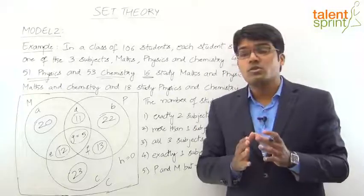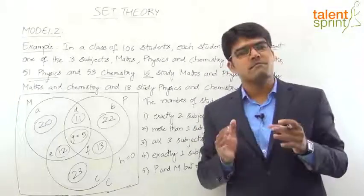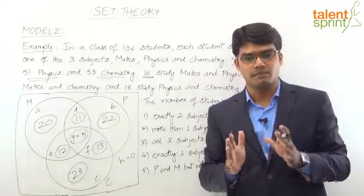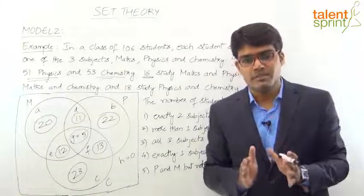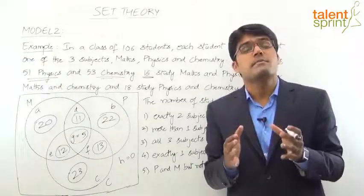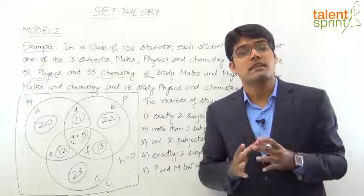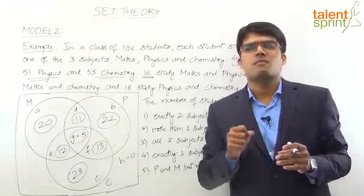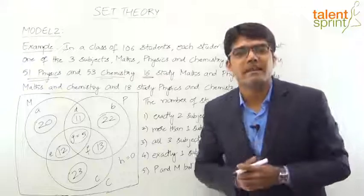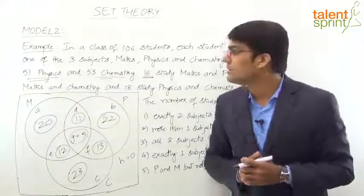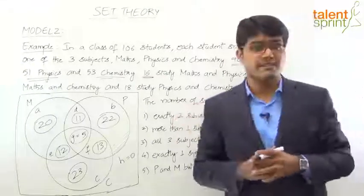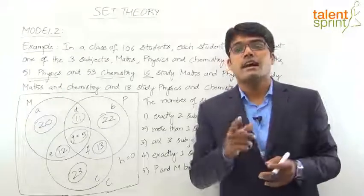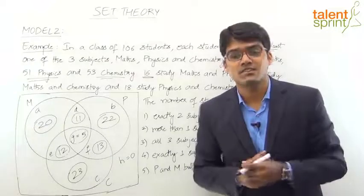So, Model 2 of Set Theory is very important — it carries 5 marks weightage and is very easy to solve. You just need to understand the Venn diagram properly, what each region represents, so that you can score all 5 marks easily in the exam. With this example, the topic of Set Theory is complete. I'll see you in the next session. Thank you.